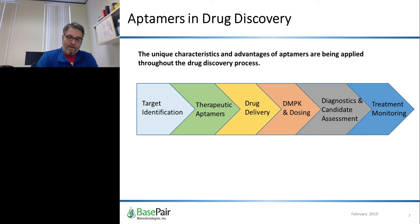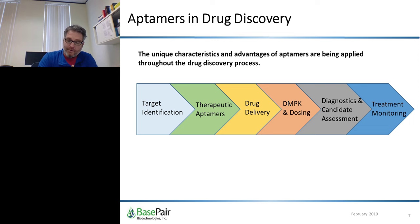For aptamers in drug discovery, the unique characteristics and advantages of aptamers are being tested throughout the drug discovery process — from the identification of new targets to the use of aptamers as direct therapeutics themselves, conjugates for targeted drug delivery, and agents for enhanced detection and monitoring. Aptamers are creating new possibilities in drug development. In the following slides, we'll move through the various stages of drug development and offer some potential advantages and published results generated with aptamers.